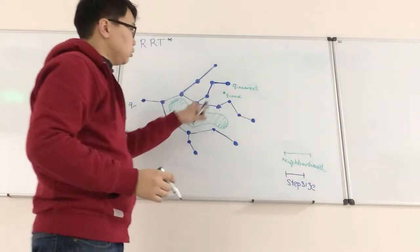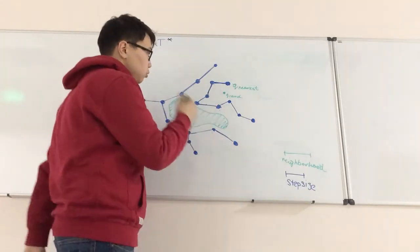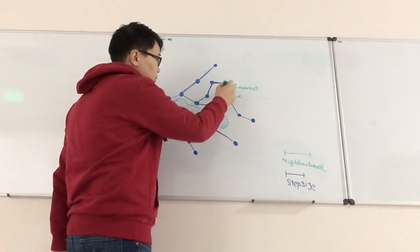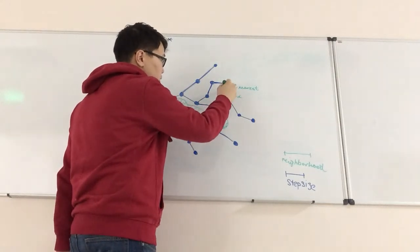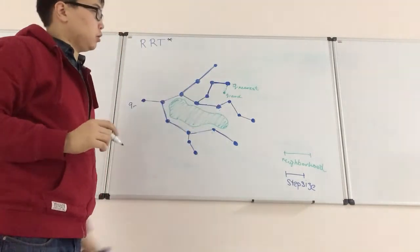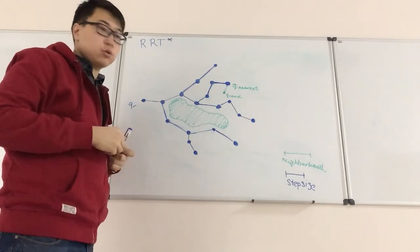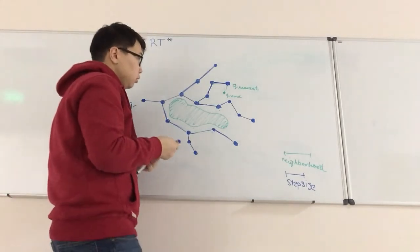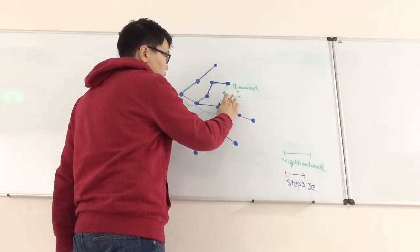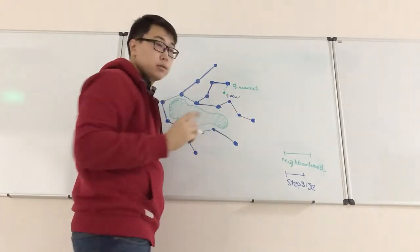As you can see, this is reachable in a single step. So we make a new node that we can connect to this one, but we will not connect it yet — we will remember that we can connect to it. After that, there is a step called Choose Parent. In this step, we look in the vicinity of Q_rand, but we will name it Q_new because it is reachable in a single step.